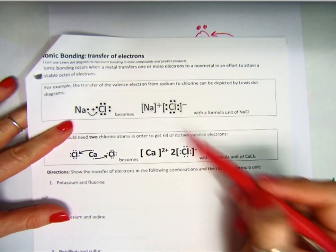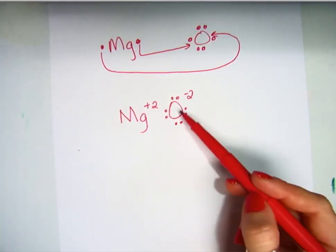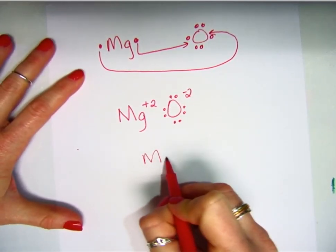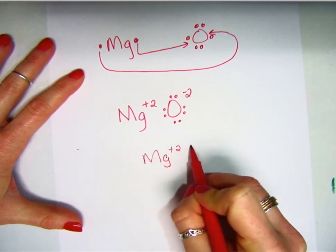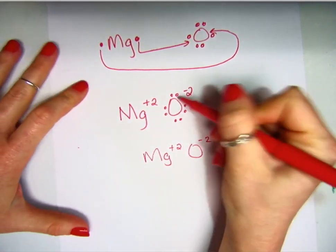It's fine to do this either way. I've done it here like this. I could have even, instead of drawing these dots, sometimes you'll just see it written like this: Mg+2 and then O-2. And that's it. It would not include the dots.